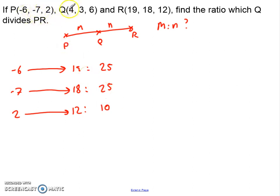Now, if we start in the X direction, we end up at 4 when we get to Q. So, we go negative 6 to 4, which in this case is 10. We go negative 7 to 3 in the Y direction for that. Again, that's 10. And 2 to 6 in the Z direction, which is 4. So, I can then start to look at each of these as a ratio. So, I get 10 over 25 for the X, 10 over 25 for the Y, and 4 over 10 for the Z.